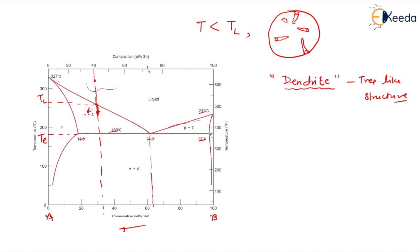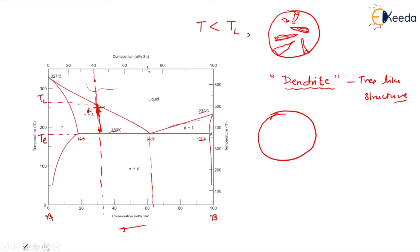From just below Tl down to just above the eutectic temperature T, the alpha will nucleate and grow in the form of dendrites, growing until it reaches T. Just above T, the structure will show alpha in a well-grown condition — the alpha grown in the dendritic manner.